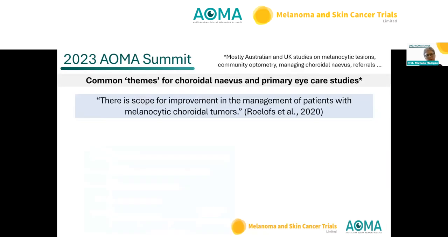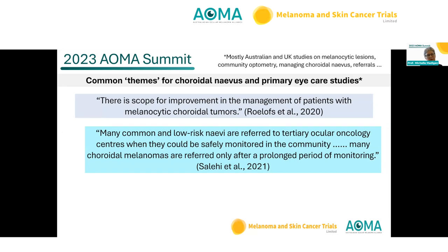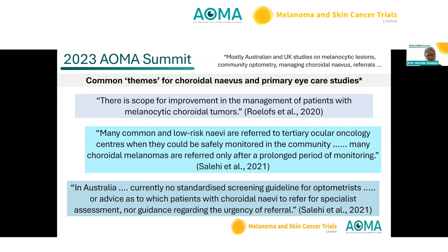The literature points out there's scope for improvement in the management of patients with melanocytic tumors — many common and low-risk nevi are being referred when they could be monitored, and choroidal melanomas are only referred after a longer time. In Australia, there's no standard guideline at the moment.